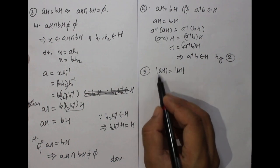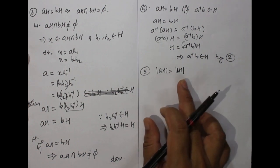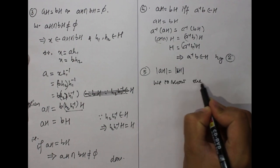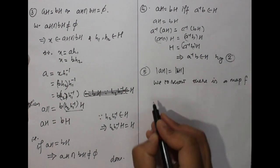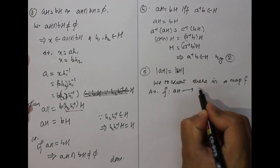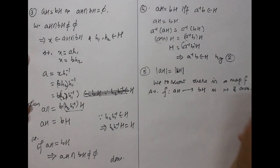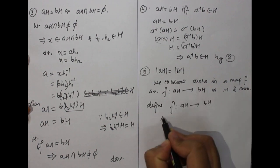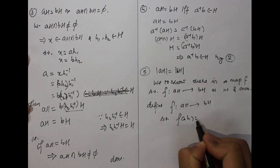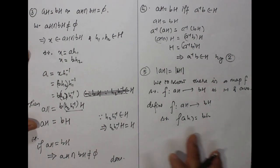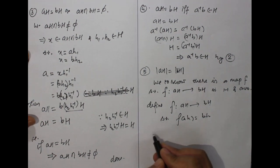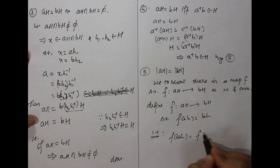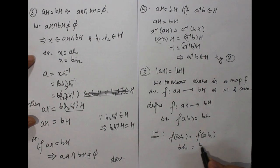Property 5: The cardinality of aH equals the cardinality of bH — the number of elements in aH equals the number of elements in bH. To prove this we define a map f from aH to bH defined by f(ah) = bh. We verify f is one-to-one and onto. For one-to-one: if f(ah1) = f(ah2), this implies bh1 = bh2, and operating by b⁻¹ on both sides from the left gives h1 = h2.